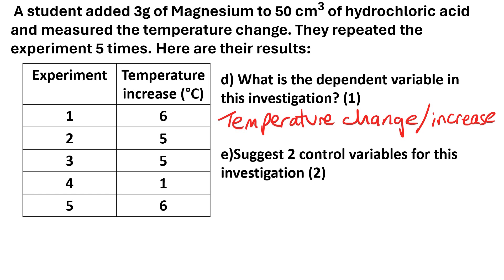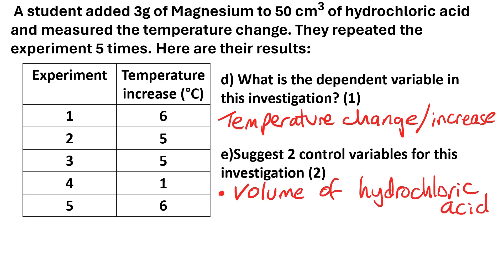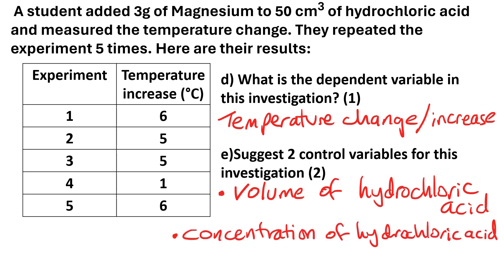Part E: suggest two control variables for this investigation. Control variables are the ones we keep the same to make it a fair test. We can't say 'amount' of magnesium or hydrochloric acid — you won't get a mark for that word. Instead, say the volume of hydrochloric acid — 50 centimetres cubed each time — and also the concentration of the hydrochloric acid and the mass of the magnesium.